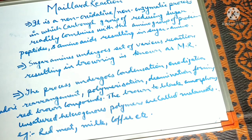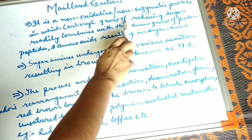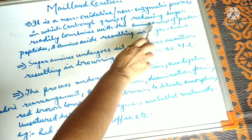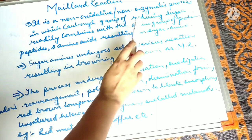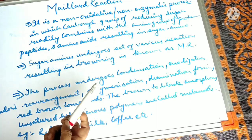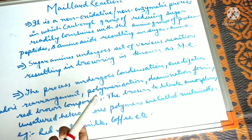For the Maillard reaction to occur, there are two main ingredients which should be present for its initiation: first is the reducing sugar, and the second is the proteins. Proteins are basically the building blocks of amino acids.